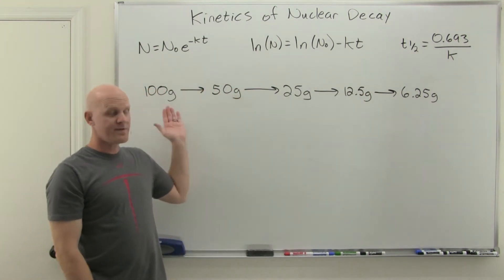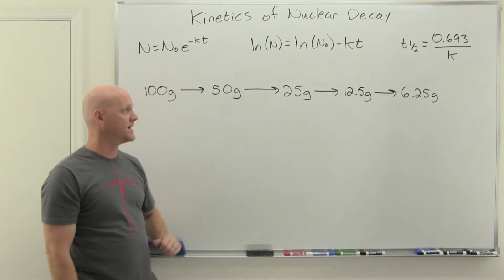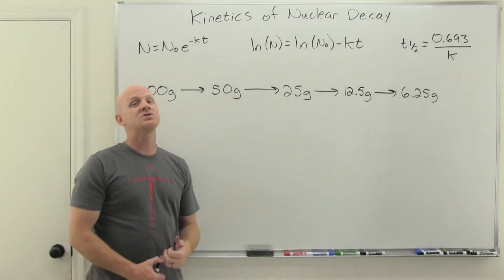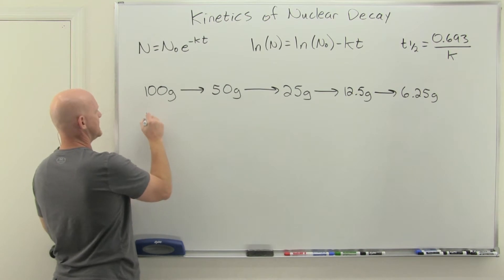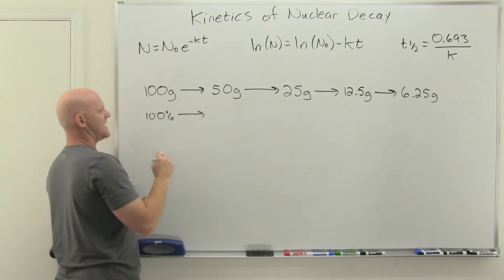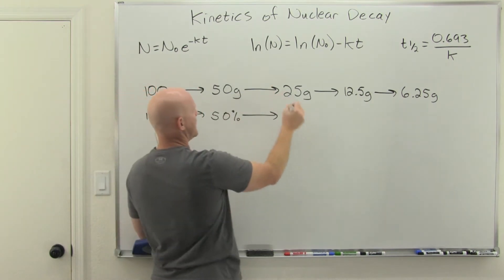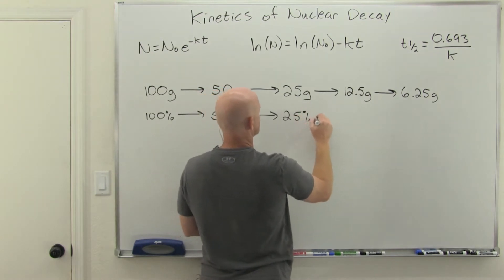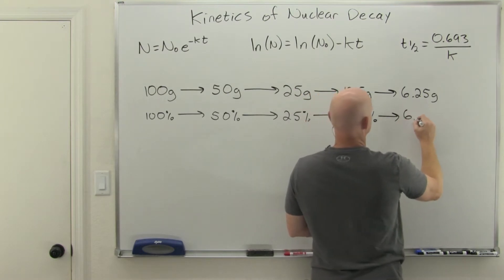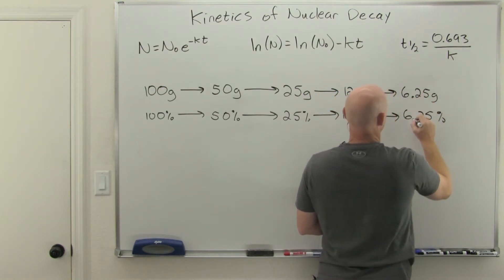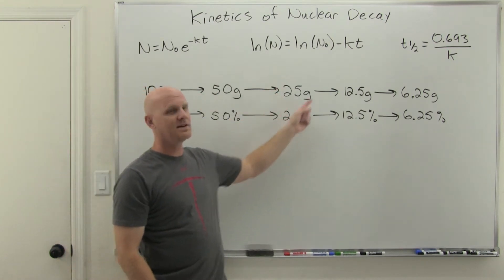We have a variety of different ways we can track this. We can do this in terms of the actual mass of the radioactive nuclide, and every half-life you just keep cutting it in half. You could also do this in terms of percentages. If we did this in percentages, we might say initially we had 100%. After one half-life, you'd have 50%. After another half-life, 50% of 50%, or 25%. Then 12.5%, then 6.25%.